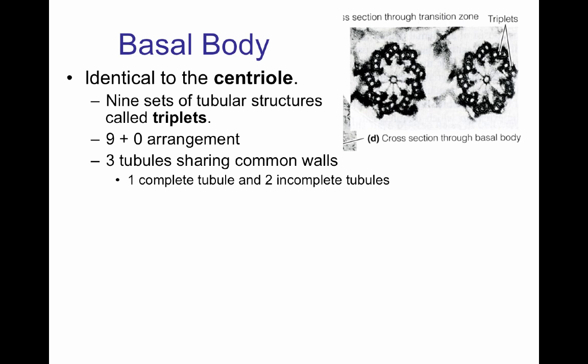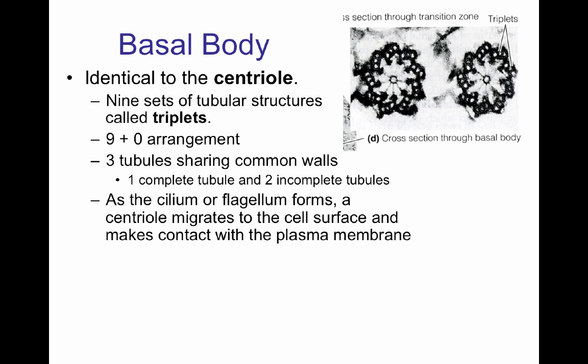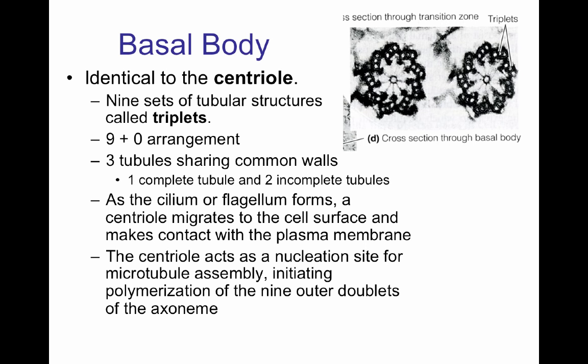Those three tubules share a common wall: one complete tubule, which is the A, and two incomplete tubules, the B and the C. The cilia and flagella form from the basal body. As the centriole moves and migrates to the cell surface, it eventually makes contact with the plasma membrane and provides a site for microtubule nucleation. As the nucleation site, microtubule assembly begins, initiating the polymerization of the nine outer doublets of the axoneme.